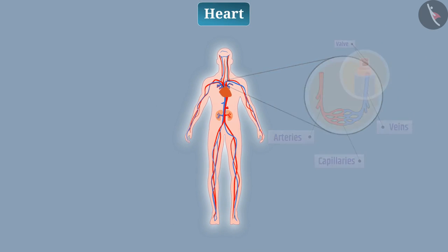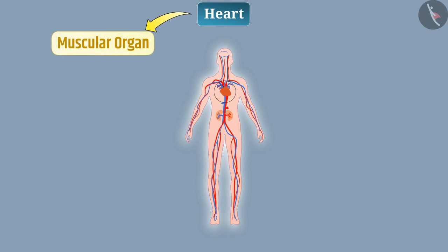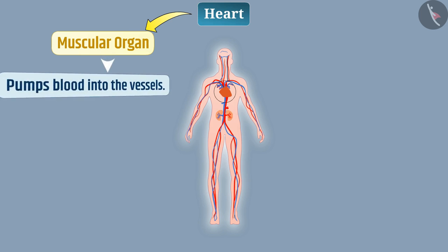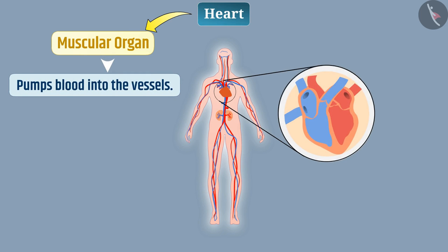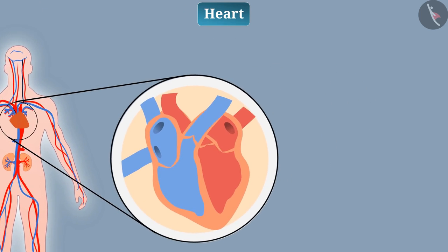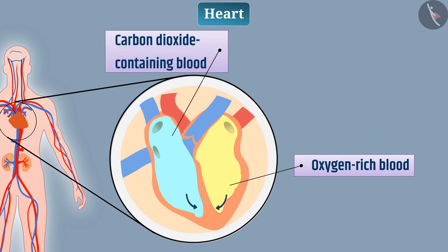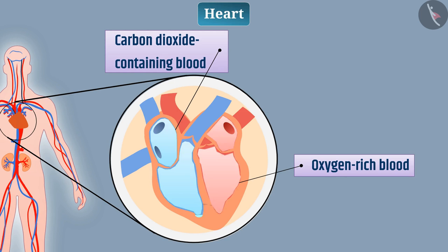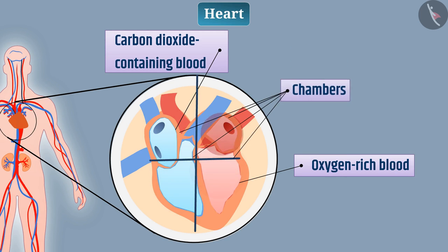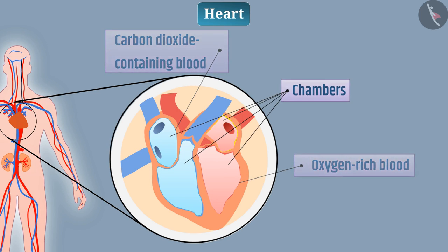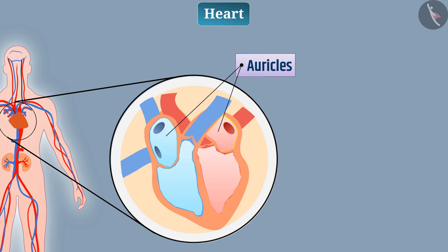The heart is a muscular organ that pumps blood into the vessels. To prevent mixing of oxygen-rich blood and carbon dioxide-containing blood, the human heart is divided into four chambers. The upper two chambers are called auricles (atria), and the lower two are called ventricles.